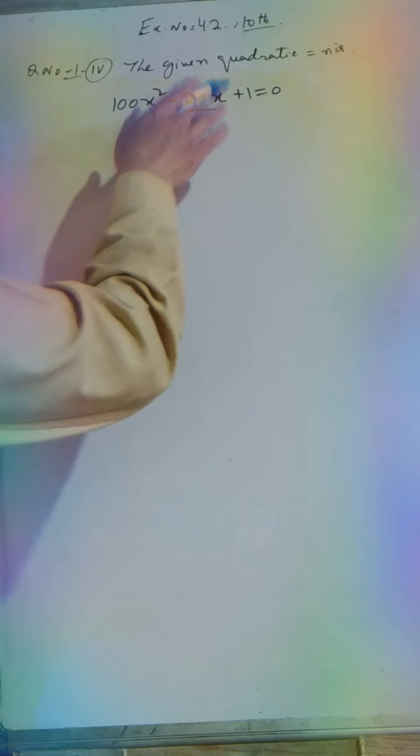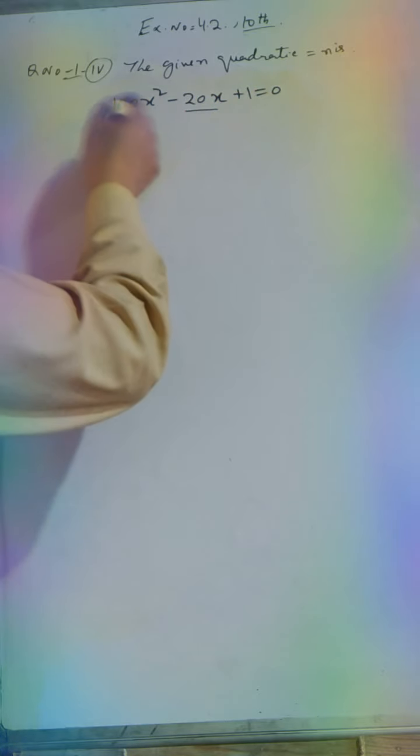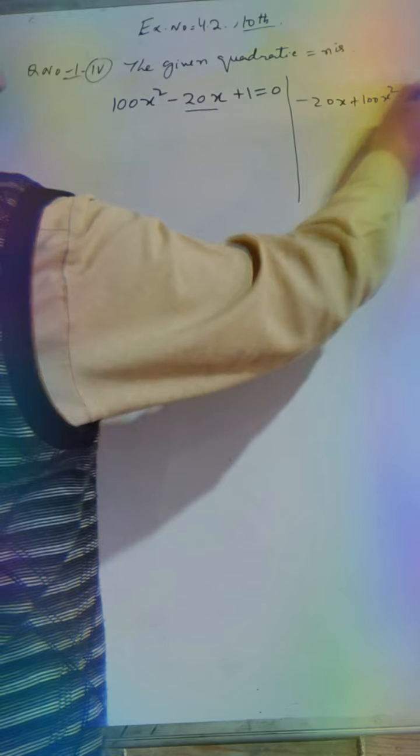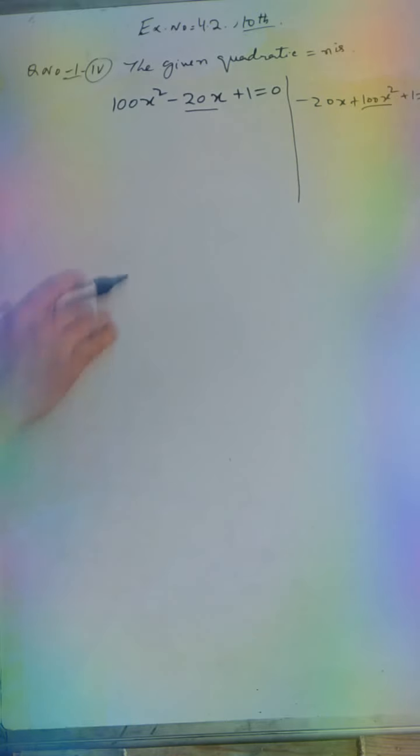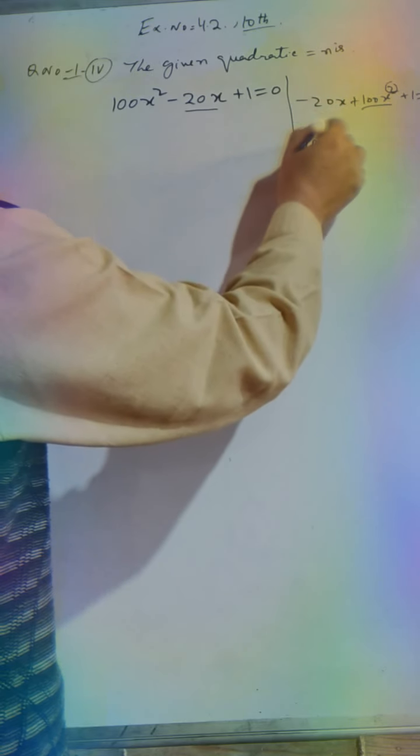For example, x power 2, x power 1, and here x power 0. So this is the middle term. Now we have to write the equation properly. The term with the highest power should be written first, so we write 100x², then minus 20x, then plus 1 equals 0. So this is the order.